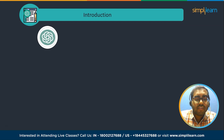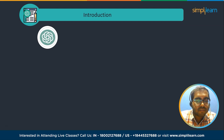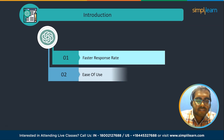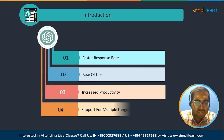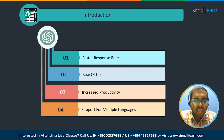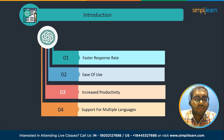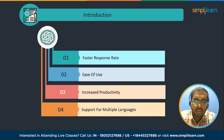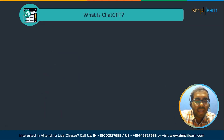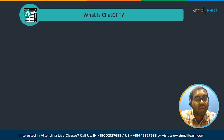Even though there are numerous AI writing tools for content creation, ChatGPT stands out from the crowd due to its faster response rate, ease of use, increased productivity, support for multiple languages, and other benefits. Now let us try to understand what exactly ChatGPT is and how to create content with it.